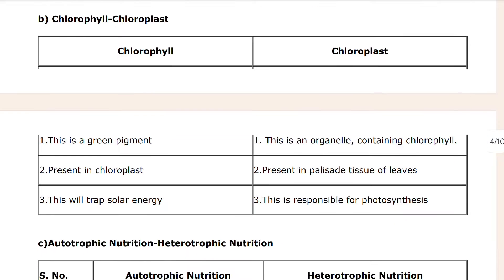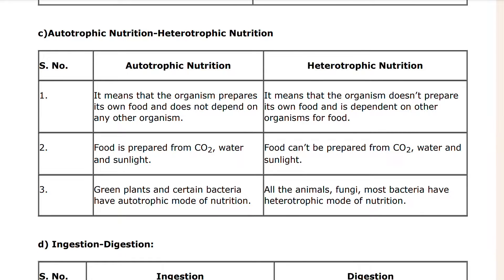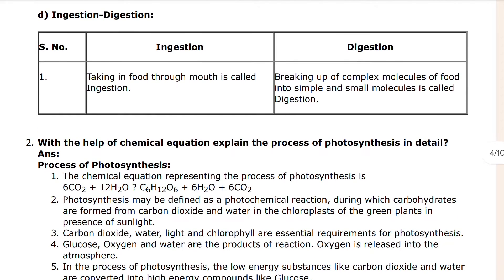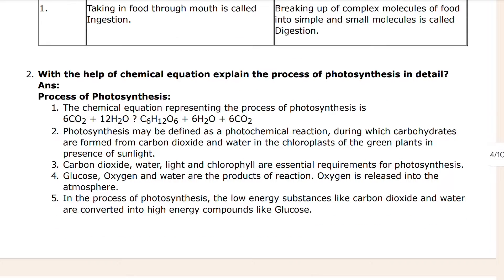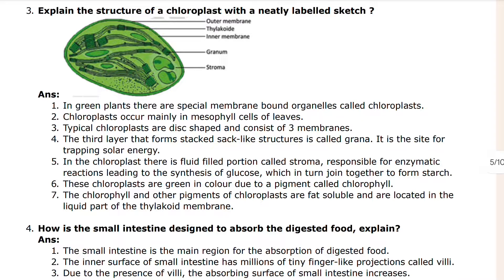You can see chlorophyll and chloroplast here. Autotrophic nutrition and heterotrophic nutrition — autotrophic means which depends by itself, and heterotrophic depends on others. Animals and human beings don't prepare their own food — they are totally dependent on plants and other animals. I hope that is clear for you.